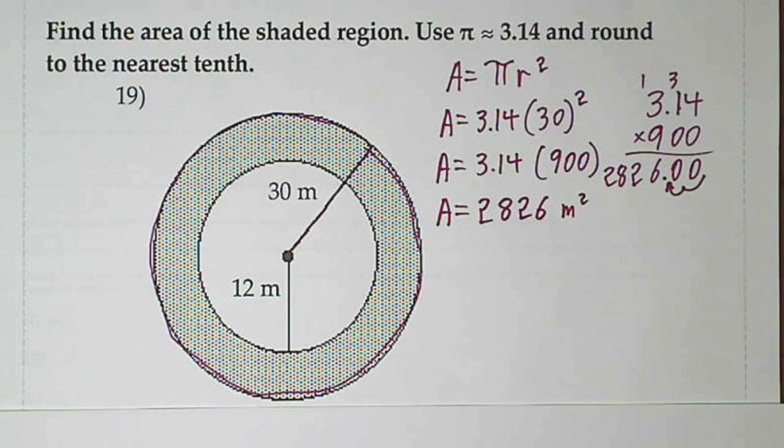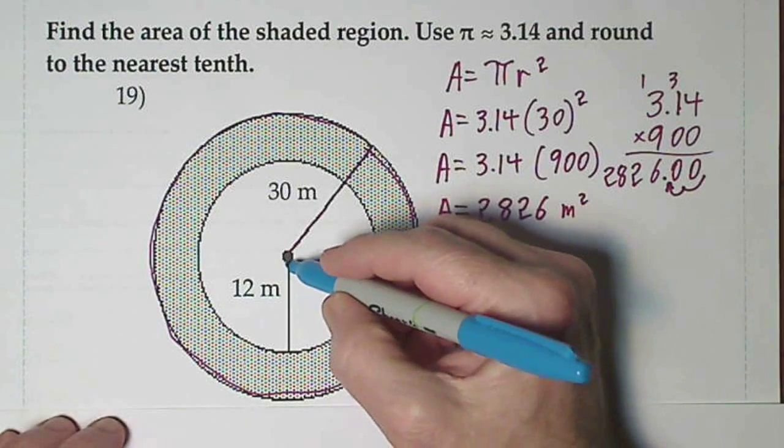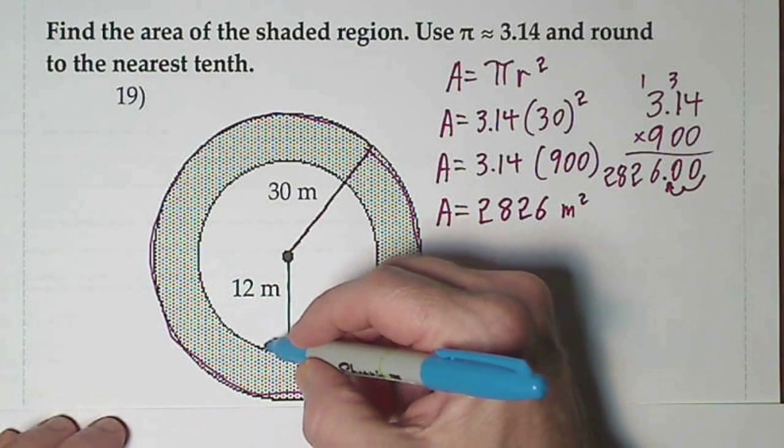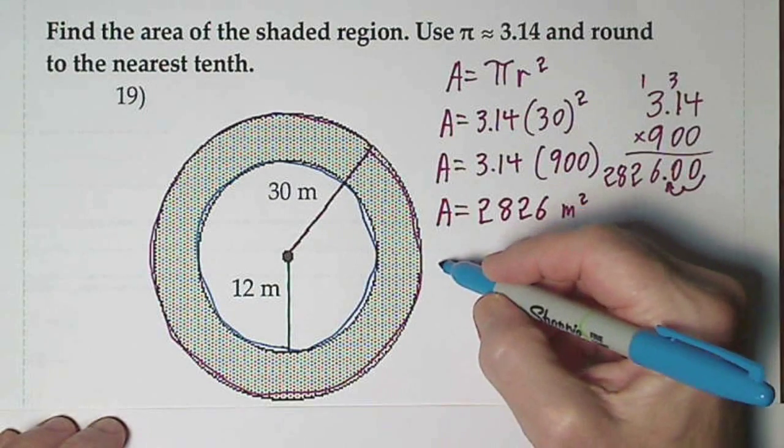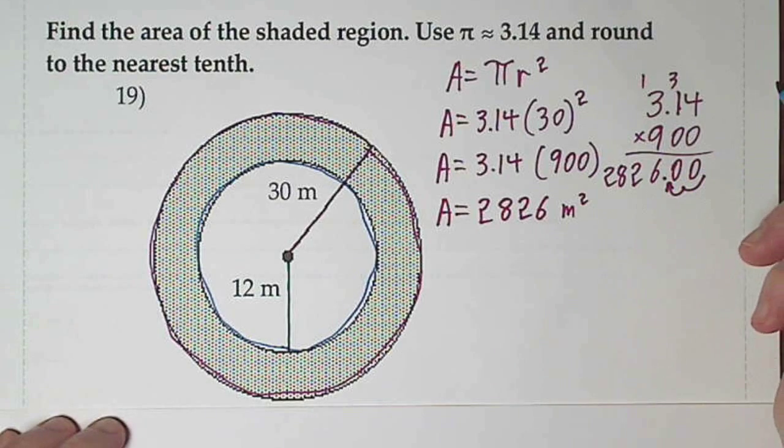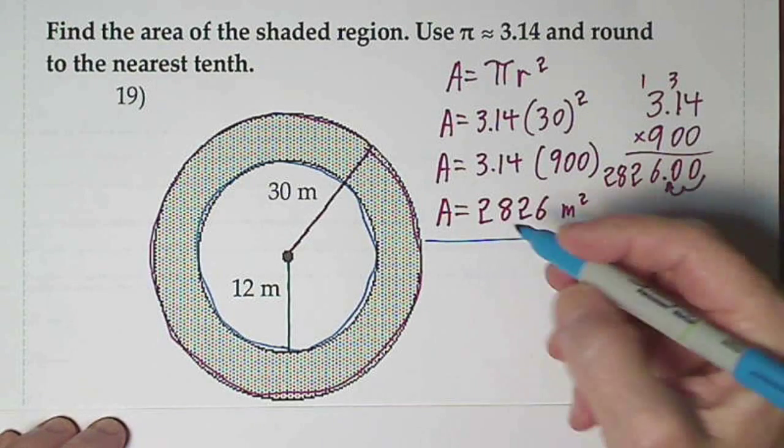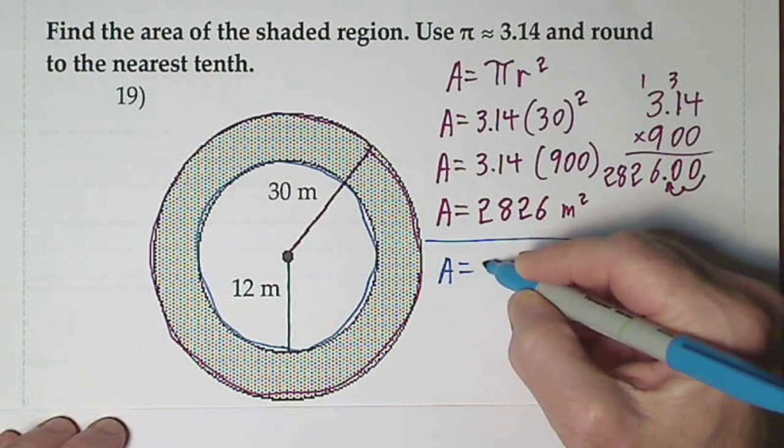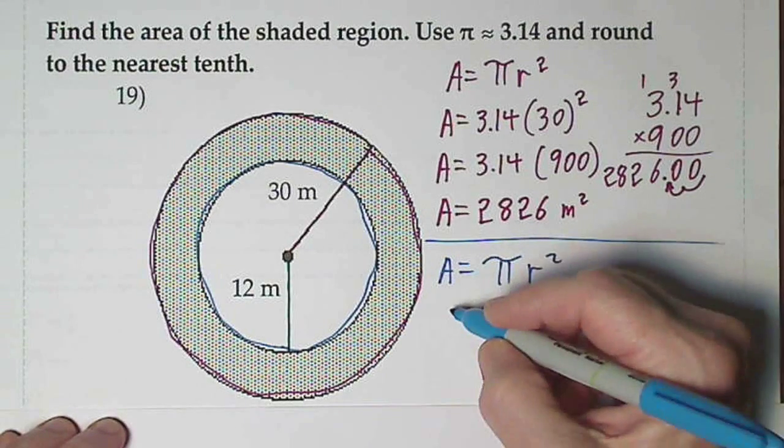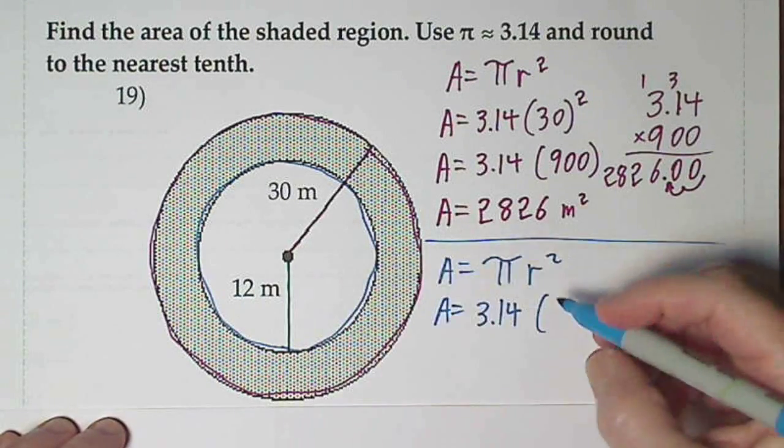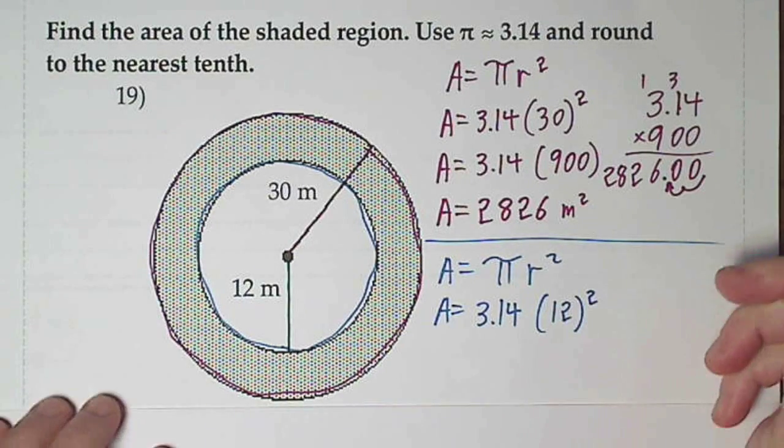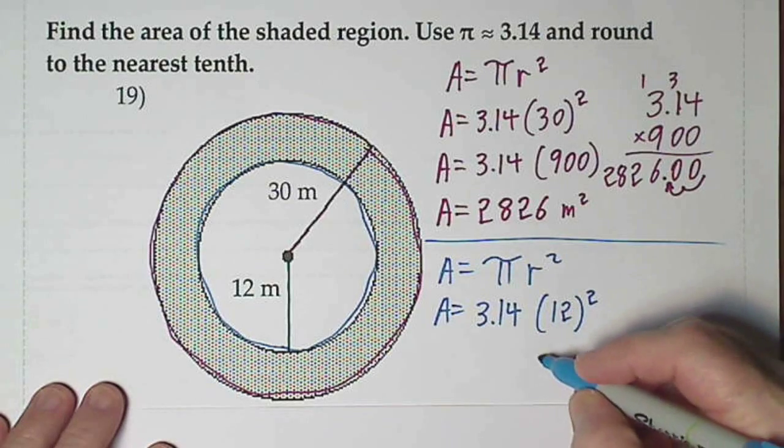And now we'll figure out the area of our small circle, which has a radius of 12 meters. So for the small circle, A = π r². For π we'll plug in our 3.14. The radius is 12 and we will have to square that. 12 times 12 is 144.